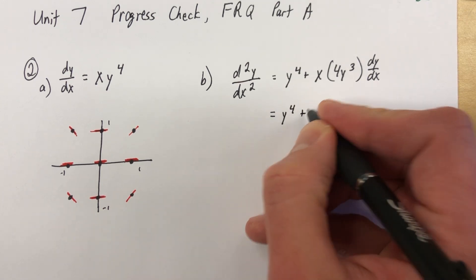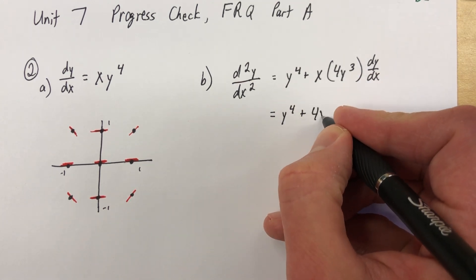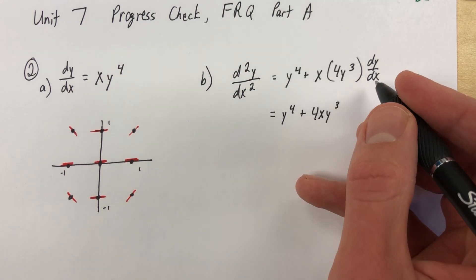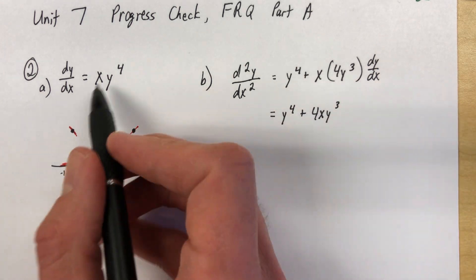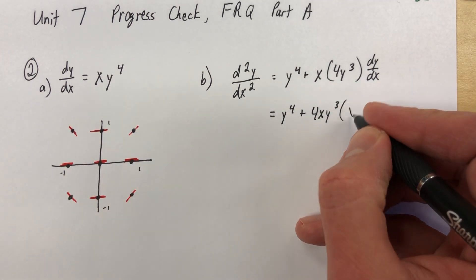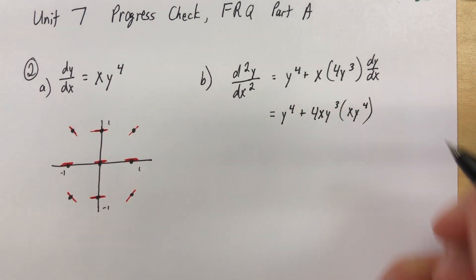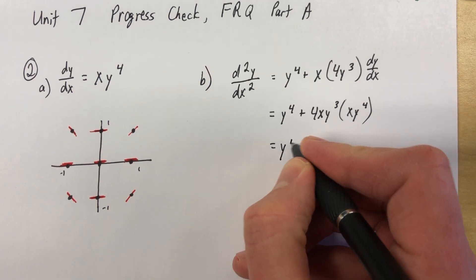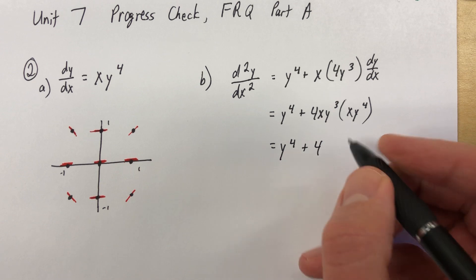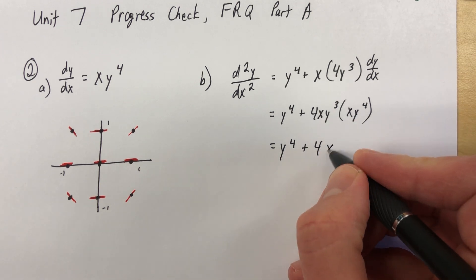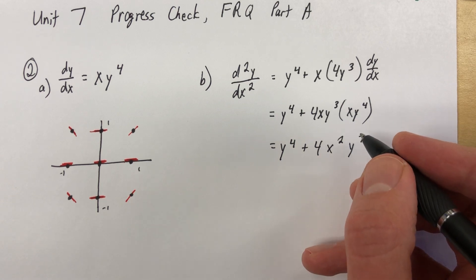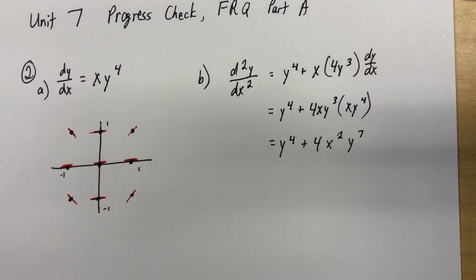So we will continue to simplify this. So we have y to the fourth plus, let's rearrange this, 4xy to the third dy/dx. Well, dy/dx, don't leave dy/dx in there. You know what dy/dx is, because it's this. It's xy to the fourth, right? So let's keep going. It is y to the fourth plus 4. Now we just use our Algebra 1 skills. x squared and y to the seventh. There we go. We found it. That is our second derivative.